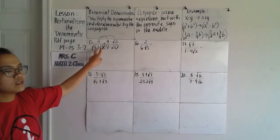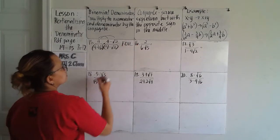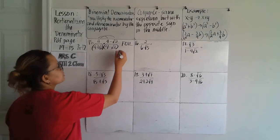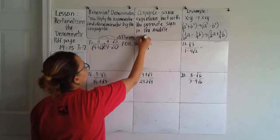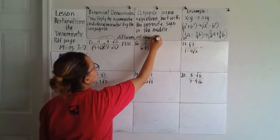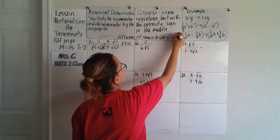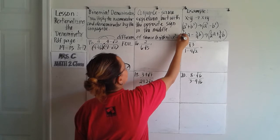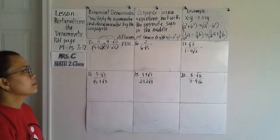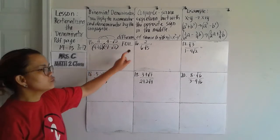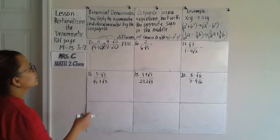You may use the FOIL method for the denominator, or you may use the difference of squares shortcut. The difference of squares formula says: x minus y times x plus y equals x squared minus y squared. If you remember that, it makes the denominator easy and that is the shortcut or the secret of this topic.